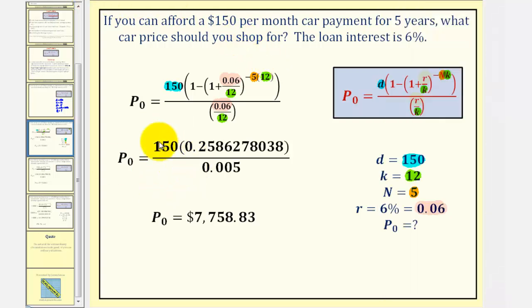So this tells us that, under these conditions, if you can afford a $150 payment per month, you should shop for a car around this price. But it's important to not forget about insurance for the car as well, which would be an extra cost. Now let's take a look at a second example.